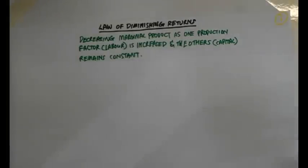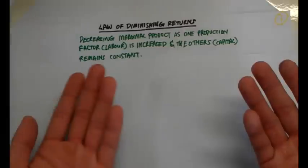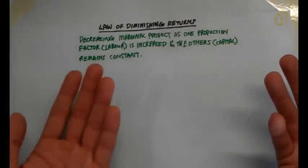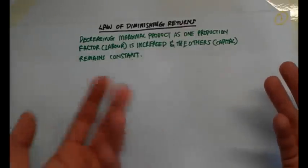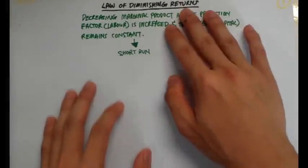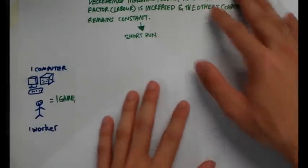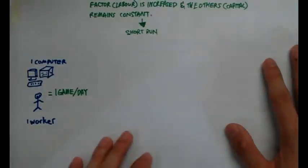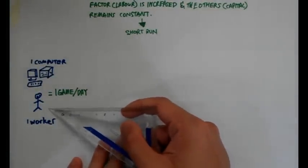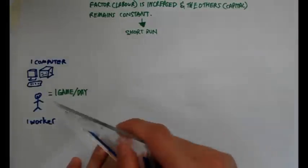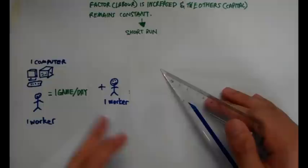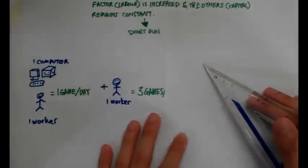If I were to hire one worker to produce one computer game, if I hire two workers, will it produce two computer games? If I hire three workers, will it produce three computer games? Not necessarily true. Let me give you this example. We have one computer, so the computer is going to be our capital, and our labor here, our little worker guy. He's able to produce one game per day. So I'm going to hire somebody else, another worker, and what happens is that he produces three games a day.